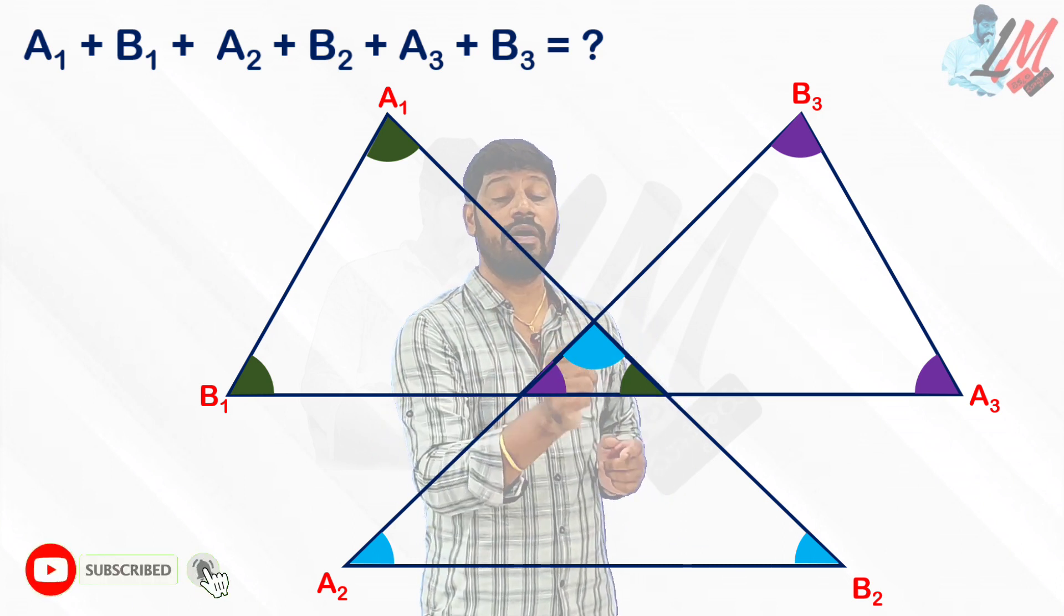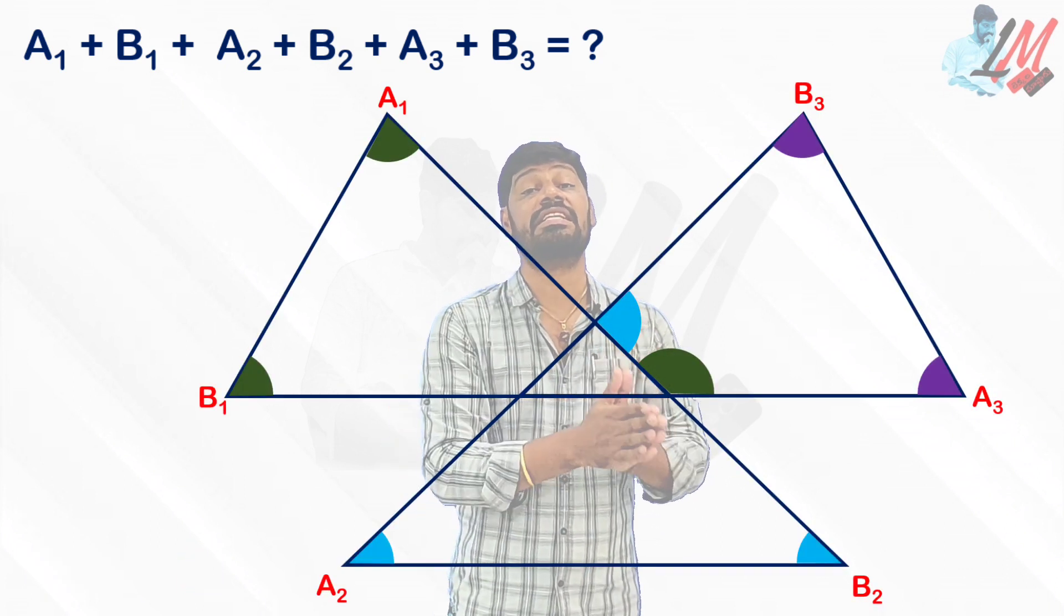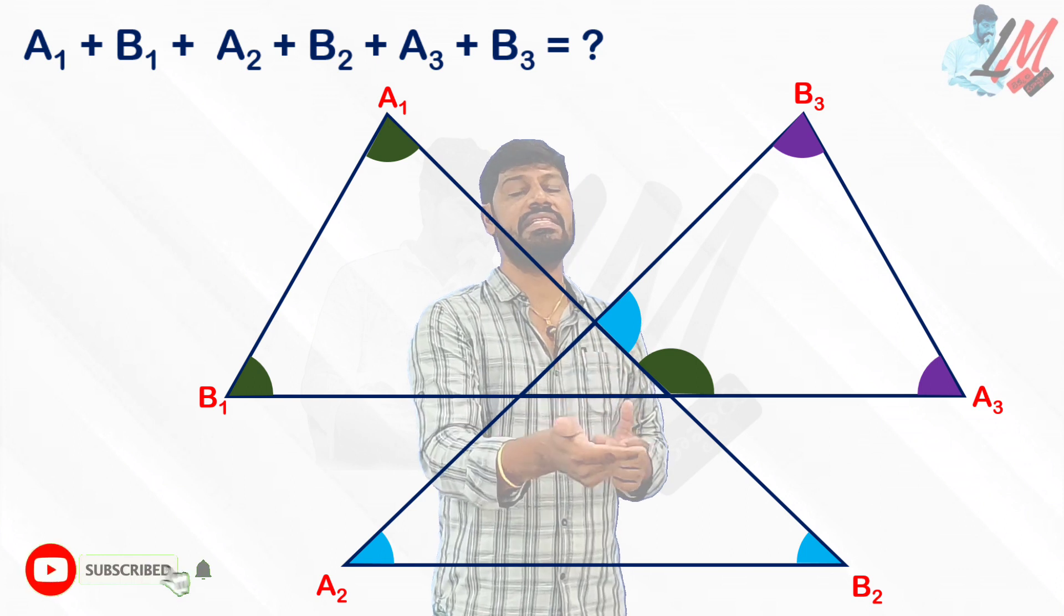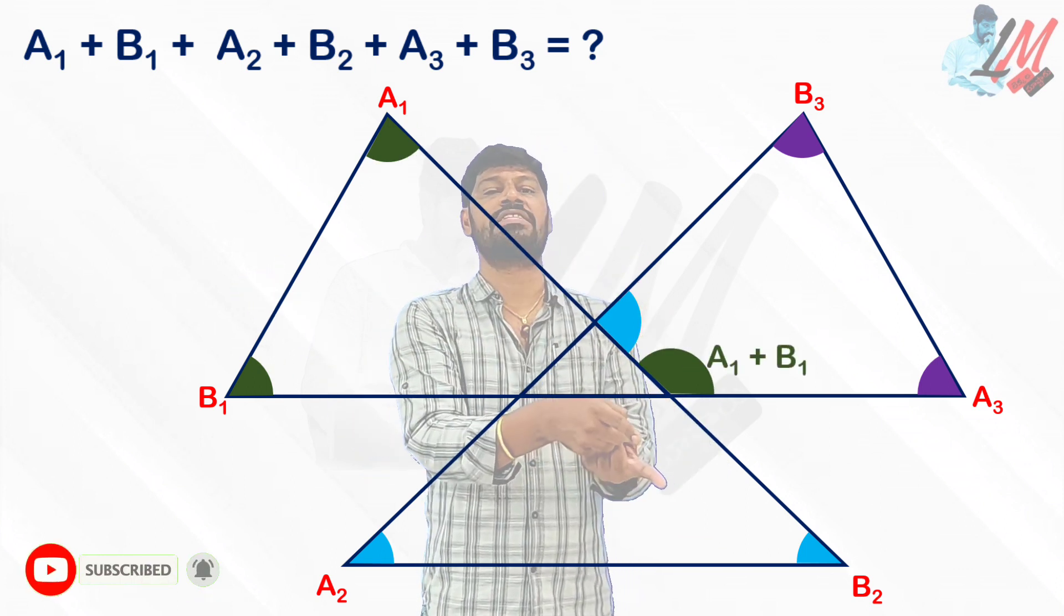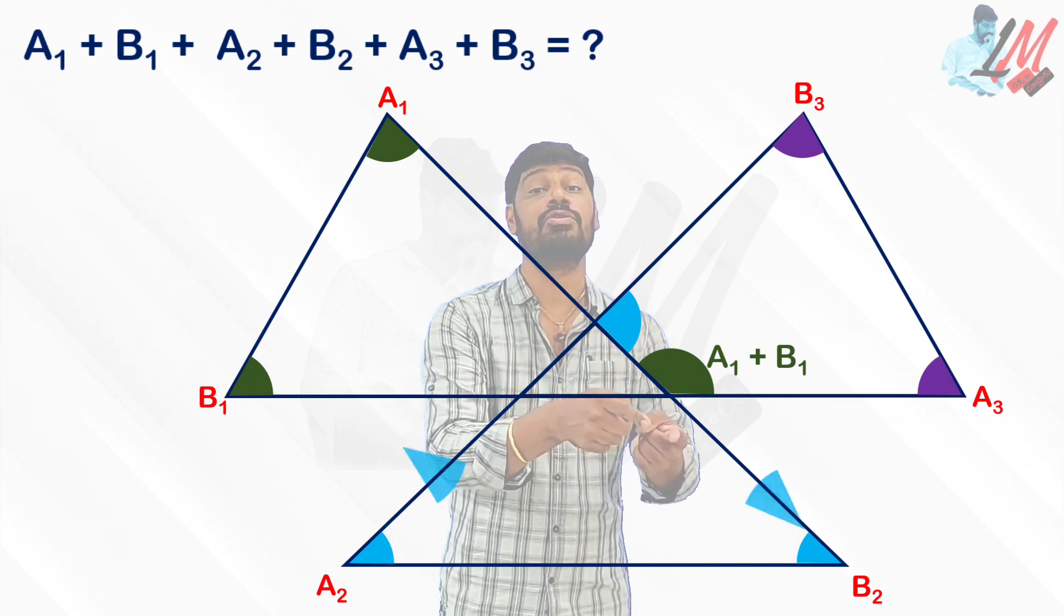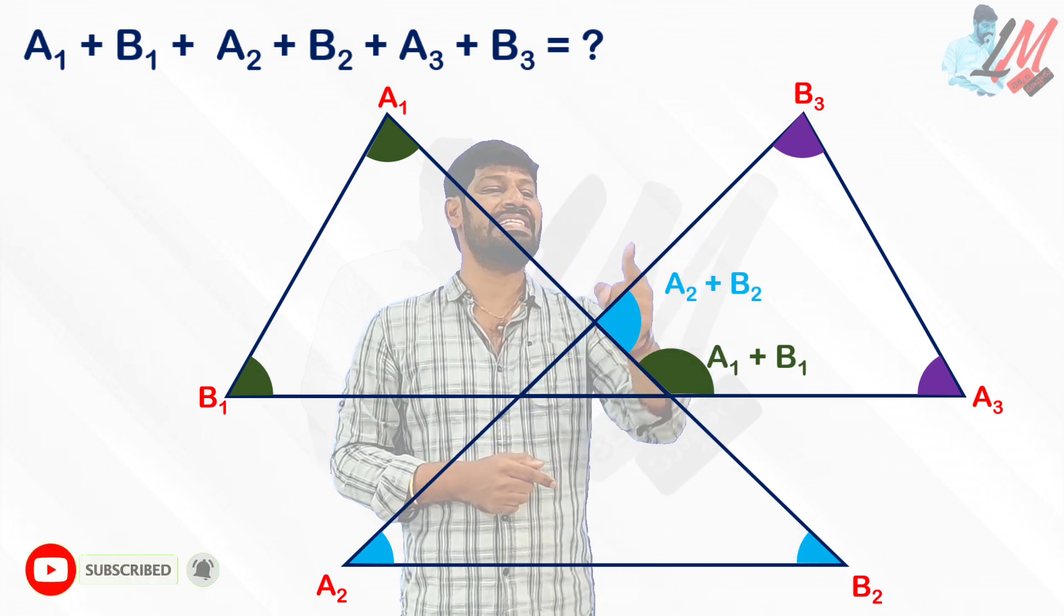If you look at the vertex C1, the angle you can see is nothing but an exterior angle. This exterior angle equals the sum of these two angles. Similarly, one more exterior angle equals the sum of these two angles. And clearly you can see a quadrilateral here.